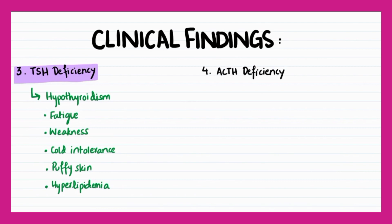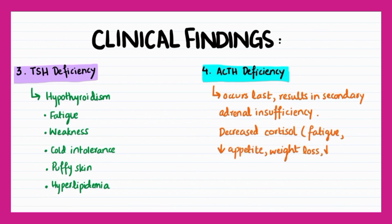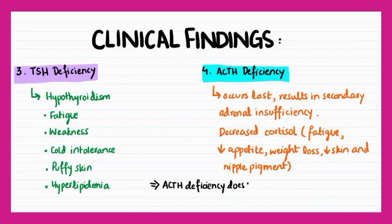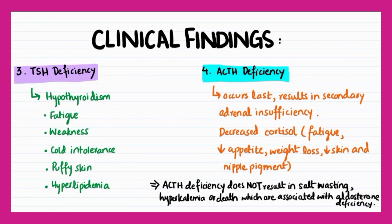Adrenocorticotropic hormone deficiency occurs last and results in secondary adrenal insufficiency. There is decreased cortisol, which results in fatigue, decreased appetite, weight loss, and decreased skin and nipple pigment. It is to be noted that ACTH deficiency does not result in salt wasting, hyperkalemia, or death, which are associated with aldosterone deficiency.